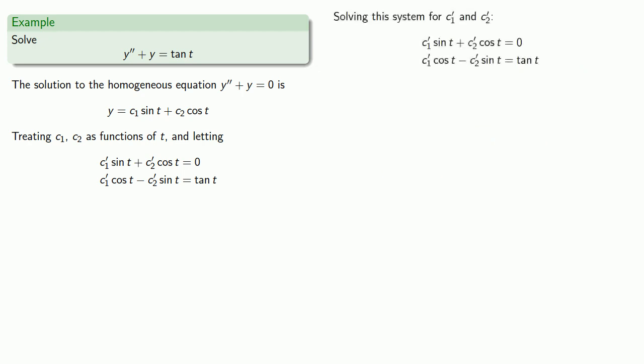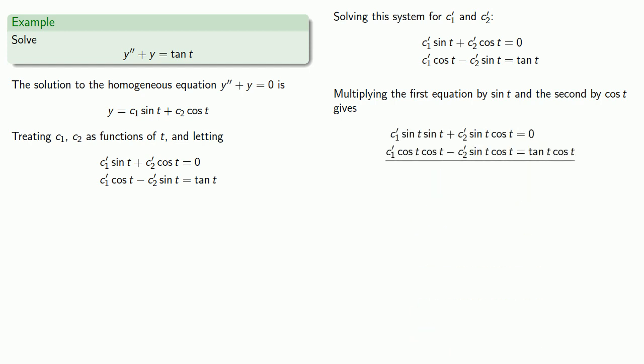So let's solve this system for c1 prime and c2 prime. One way we might do that is if we multiply the first equation by sine of t and the second equation by cosine of t. If we add our two equations and simplify this, c1 prime is sine of t.